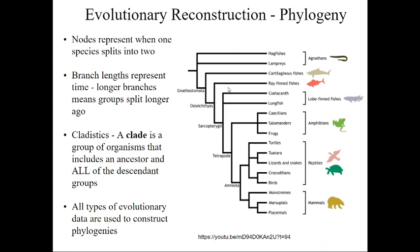Now we've got to the lungfish. Here's a problem. Remember the definition: a clade is an ancestor and all of the descendants. We've got fish, but this ancestor back here also gave rise to all of this over here. But if we define fish as just these guys and not these, that's not a clade.